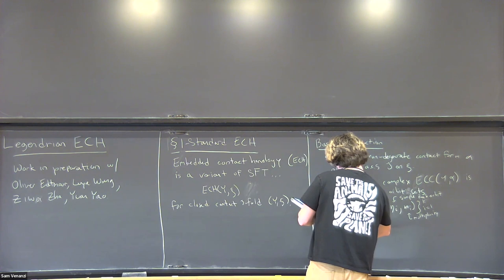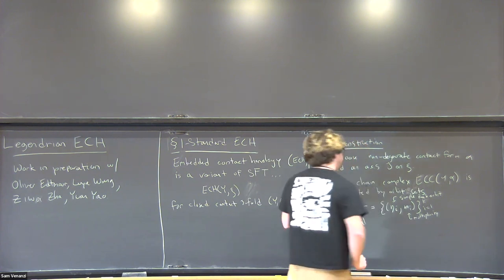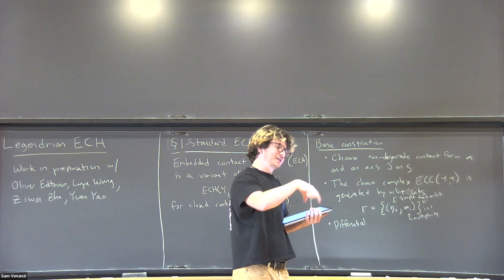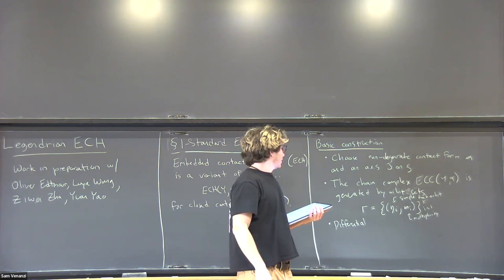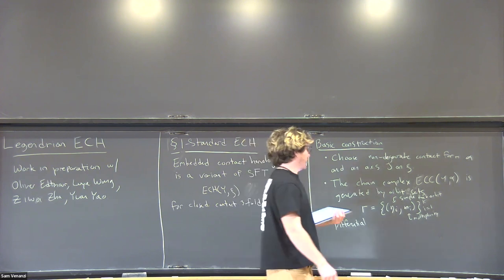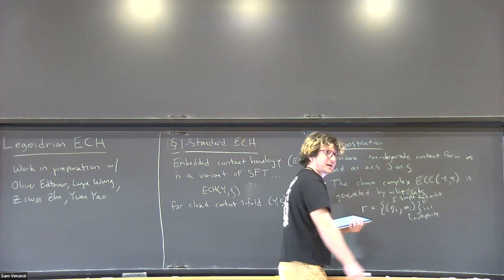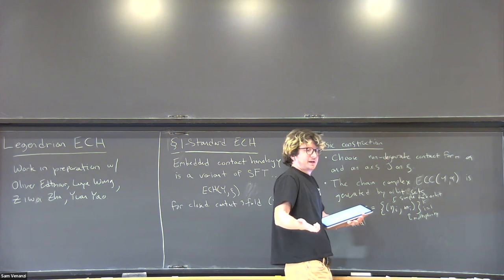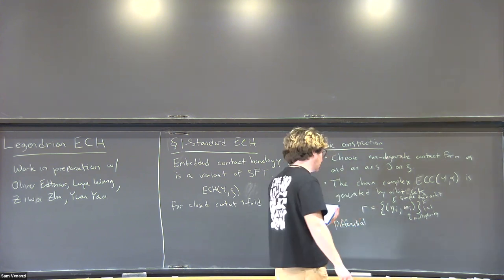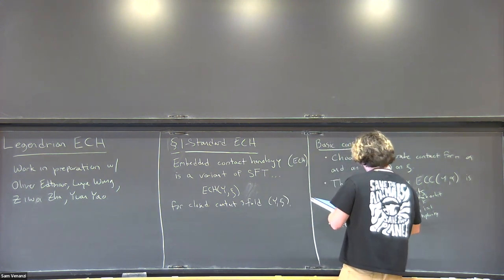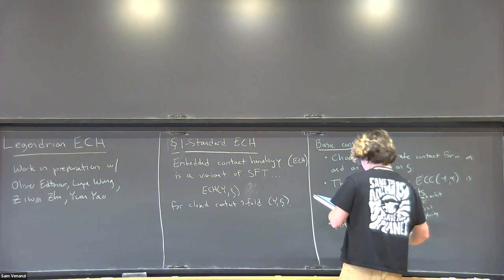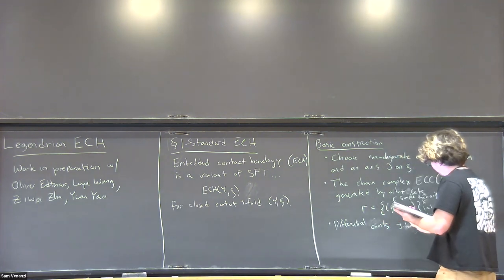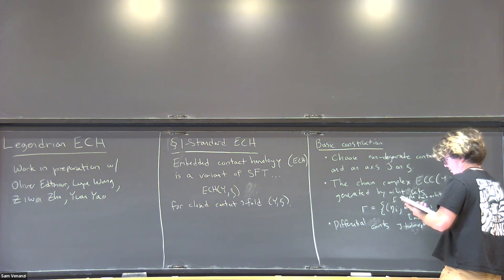The differential counts J-holomorphic currents. A current is kind of like the holomorphic curve version of an orbit set. A current is a set of pairs where these things are somewhere injective—they end up being embedded—and the N_i are some multiplicity. The constraint you want to put on these is that the ECH index is one. I'll talk about the ECH index in a moment.